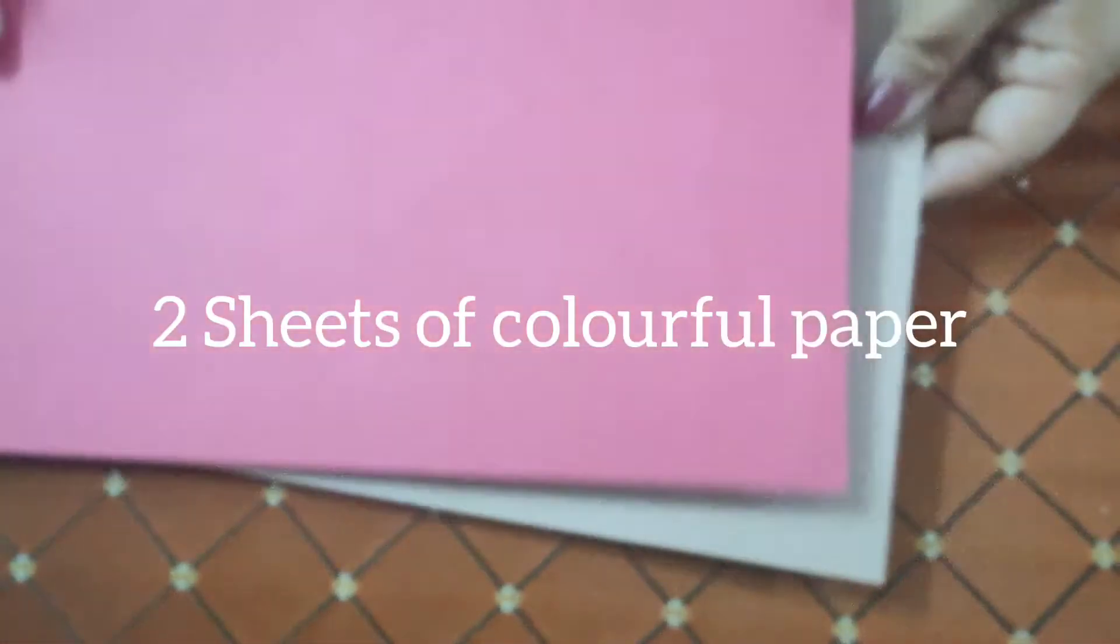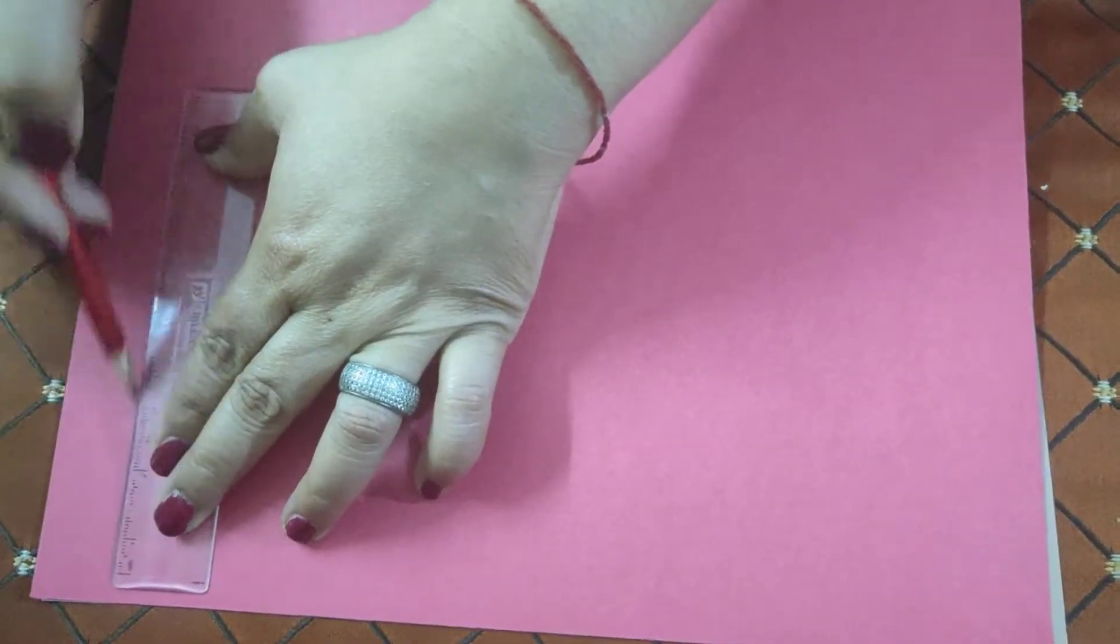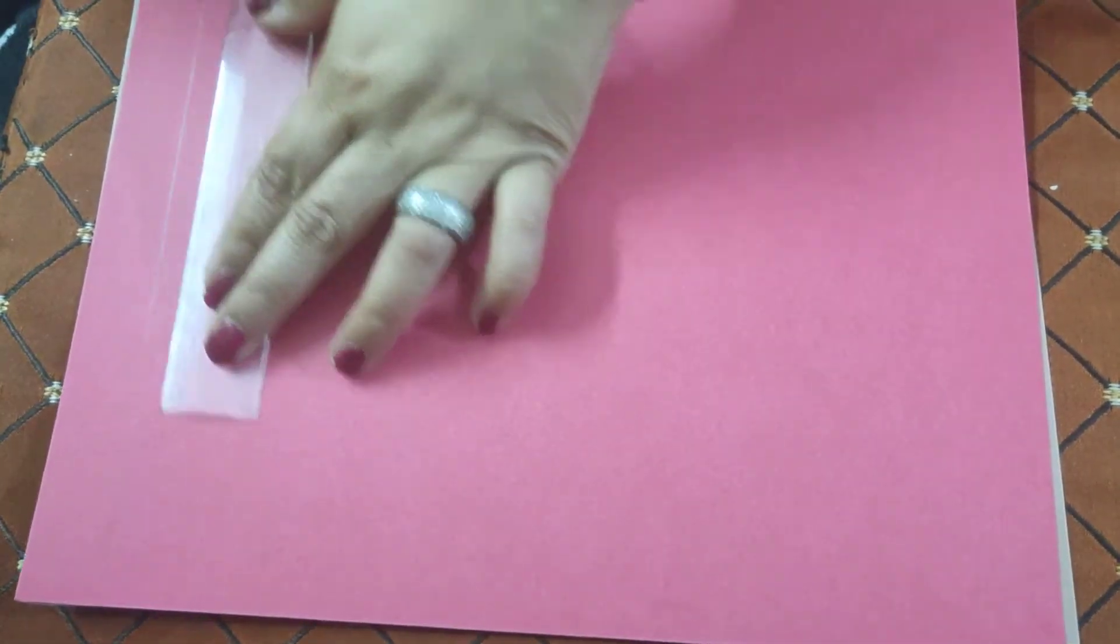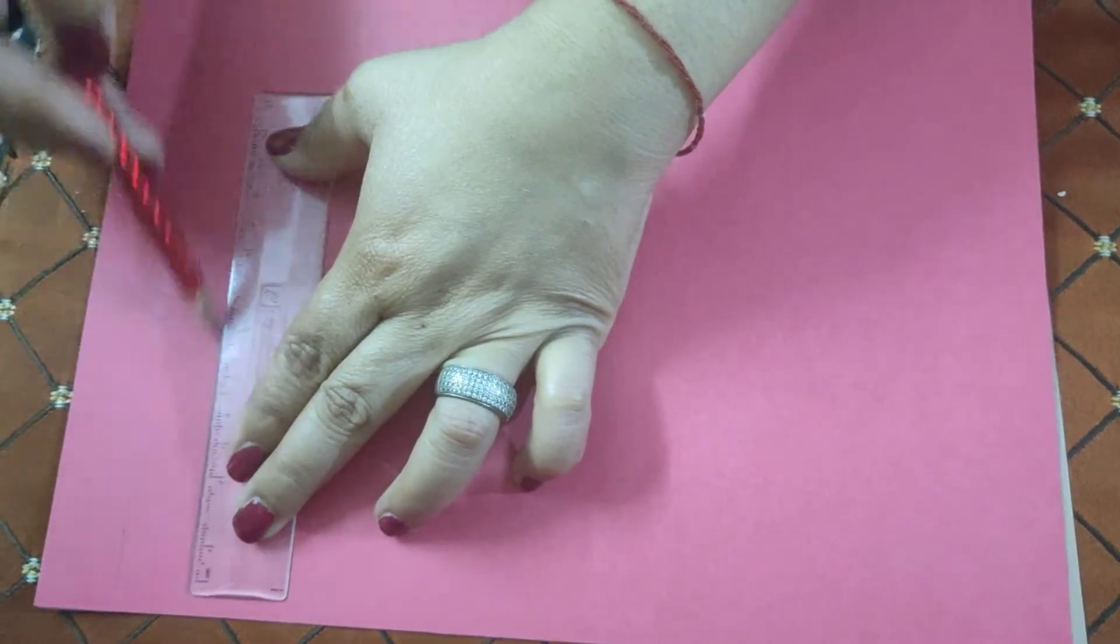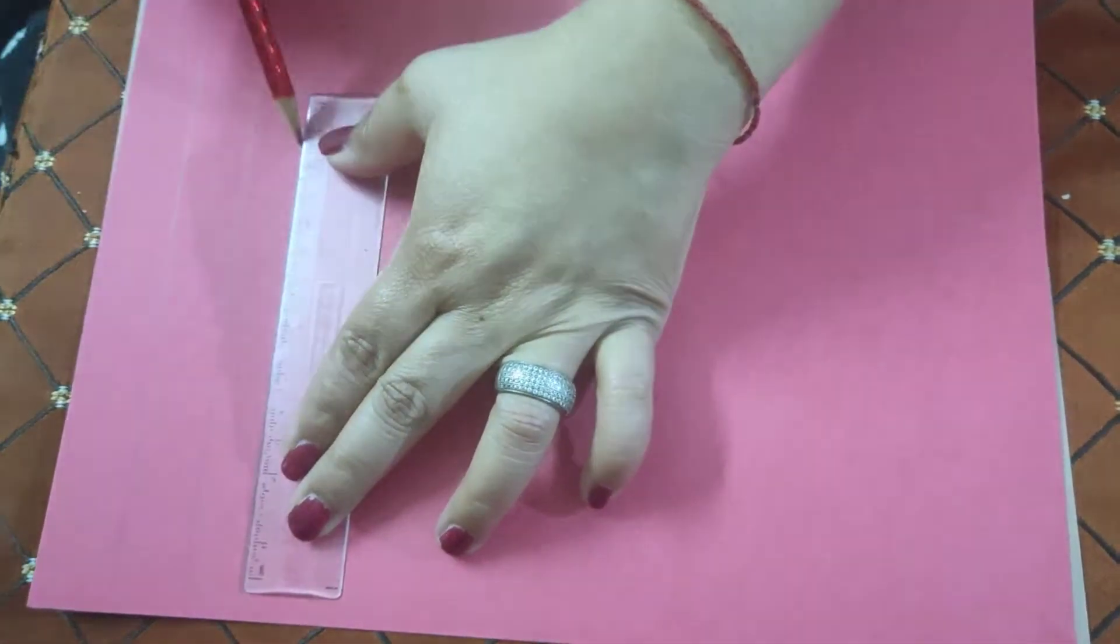It can be rectangular or square shaped. Using a scale and pencil, we will draw lines at equal distances on both sheets. On one sheet we will draw the lines breadthwise, and on the other sheet lengthwise.